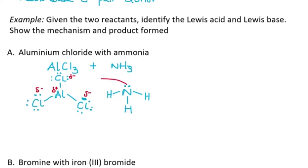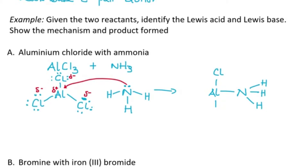Due to the partial positive charge on aluminium, the electrons are attracted to it. The flow of electrons goes from nitrogen over to aluminium. As a result, we form a bond between aluminium and nitrogen, creating a product where nitrogen has three hydrogens and aluminium retains its three chlorides.